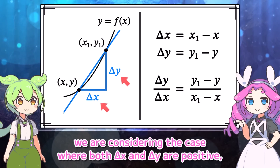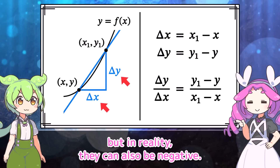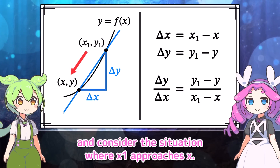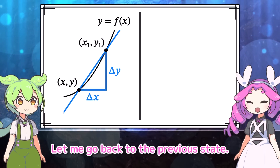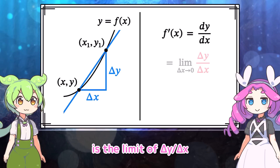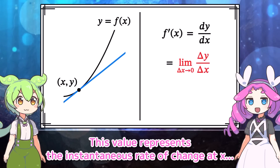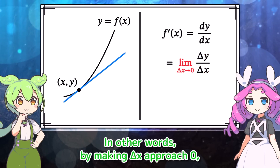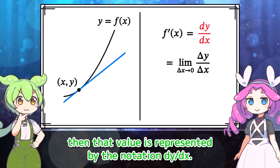We are considering the case where both delta x and delta y are positive, but in reality they can also be negative. Now let's fix x and consider the situation where x₁ approaches x — we obtain the tangent line at x. Expressed mathematically, f prime of x, or dy by dx, is the limit of delta y over delta x as delta x approaches 0. This value represents the instantaneous rate of change at x, or the slope of the tangent line. By making delta x approach 0, if delta y over delta x approaches a certain value, that value is represented by the notation dy by dx.